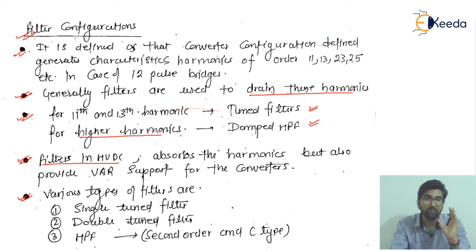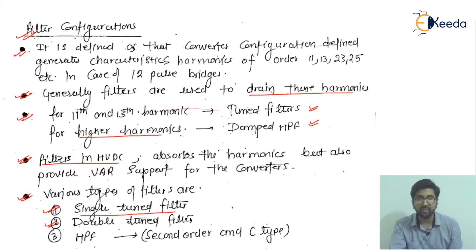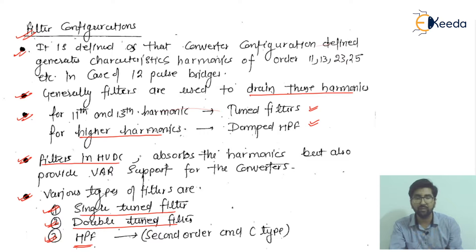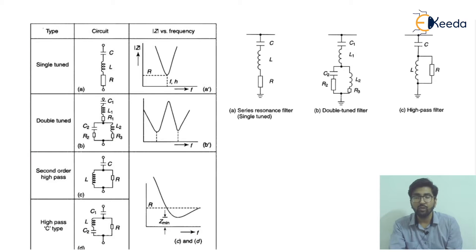There are three types of filters. The first is the single tuned filter. The second is the double tuned filter. The third is the HPF, that is the high-pass filter. The high-pass filter can be of second order or C-type configuration. These are the main types of filters we will be discussing.